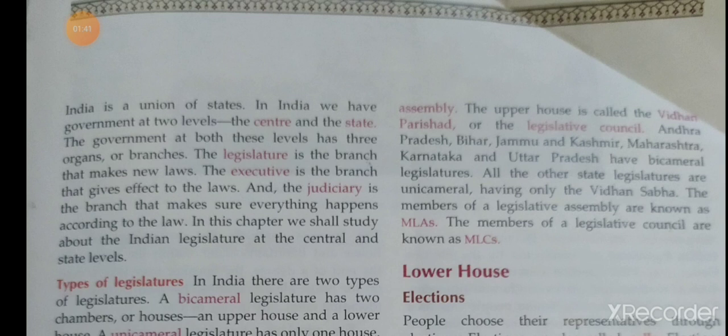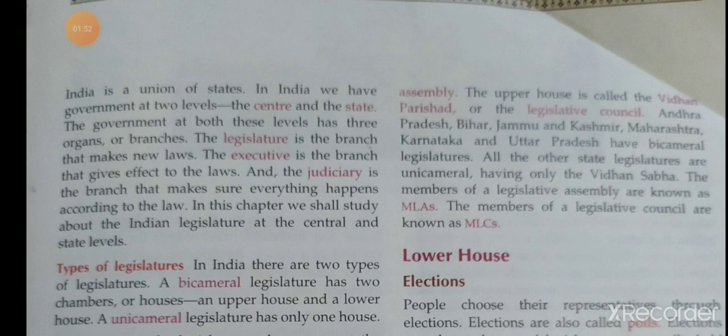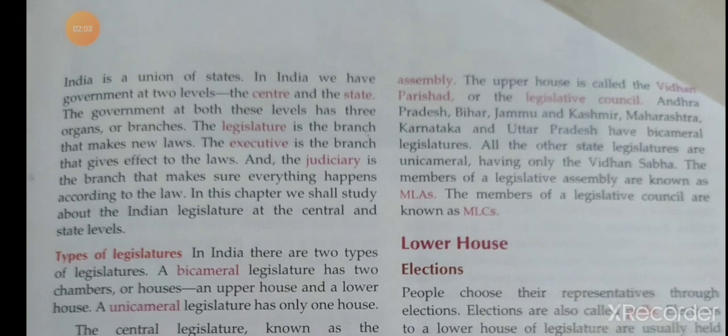There are two types of legislature. A bicameral legislature has two chambers — an upper house and a lower house. A unicameral legislature has only one house.